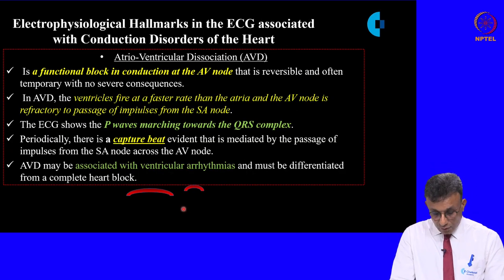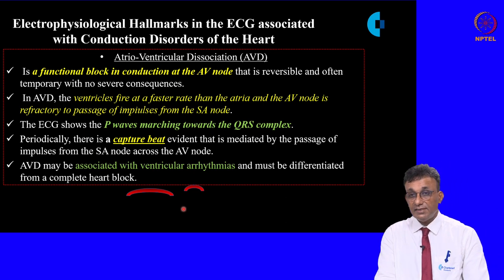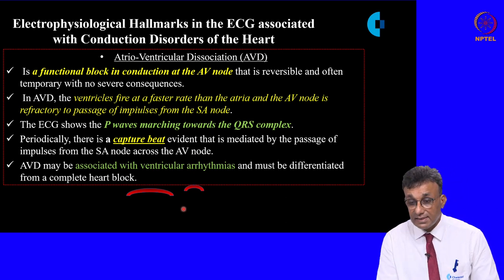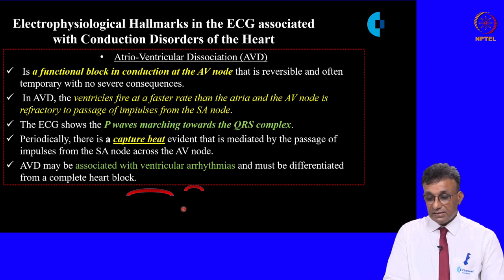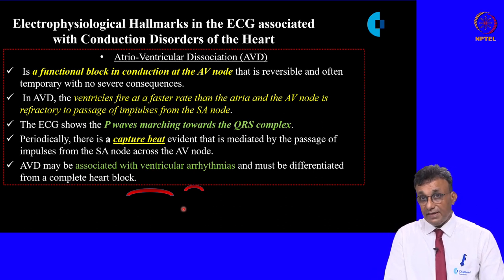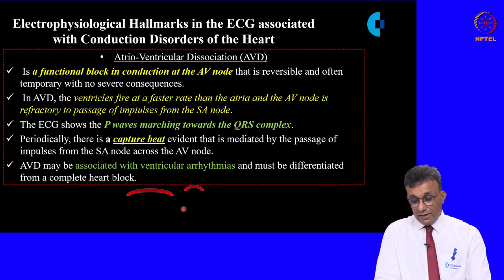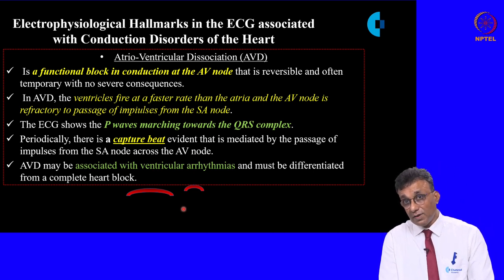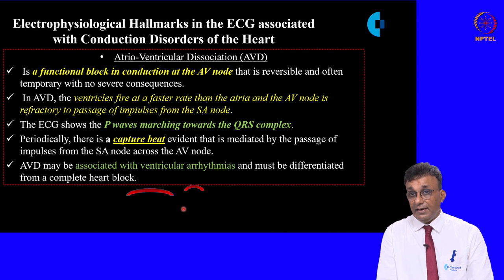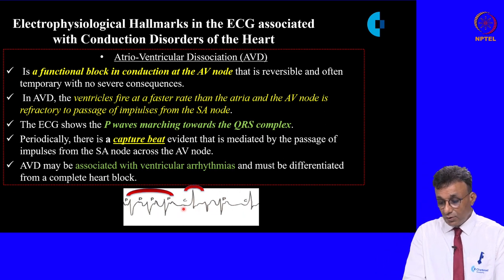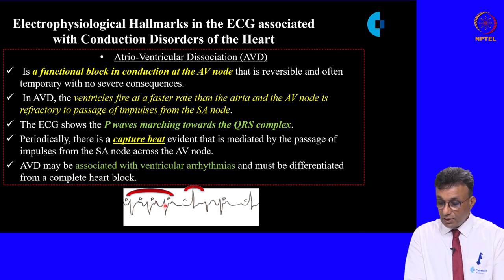Atrioventricular dissociation is a functional block of conduction in the AV node. As a result, the ventricles fire at a faster rate than the atria since the AV node is refractory to impulses from the SA node. The P waves are seen marching towards and overtaking the QRS complexes, occasionally followed by a normal rhythm known as the capture beat. This tracing shows P waves marching towards and overtaking the QRS complexes.